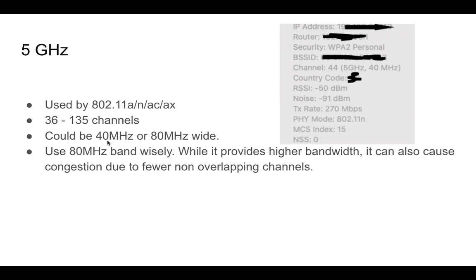The channel is also a lot wider in 5 GHz, which is why we have better throughput. We have a 40 MHz channel and also an 80 MHz channel. If you're using 80 MHz, you need to use that band wisely because while you get higher bandwidth, you could also have congestion if you don't design the network properly, due to the fewer non-overlapping channels.